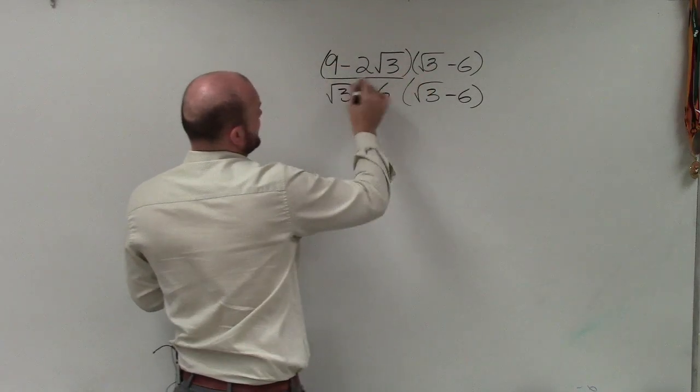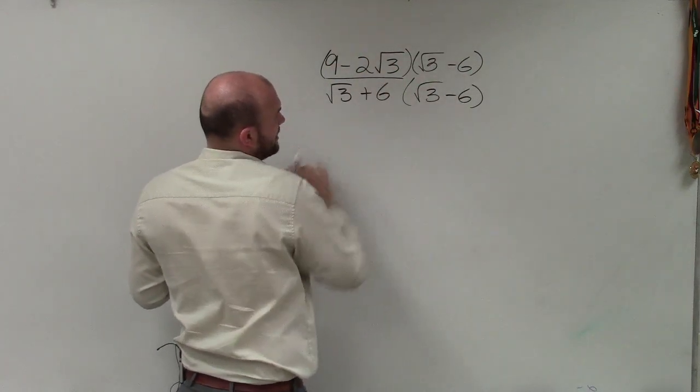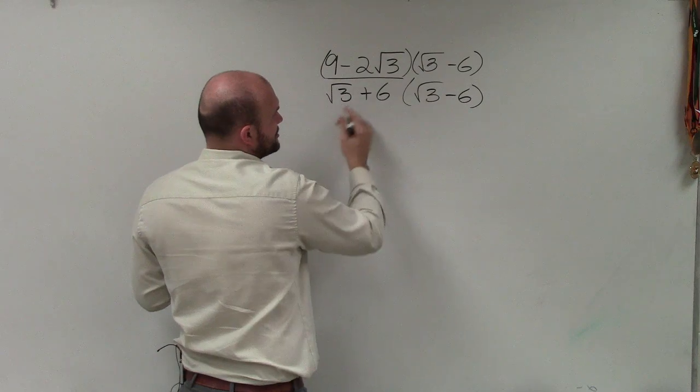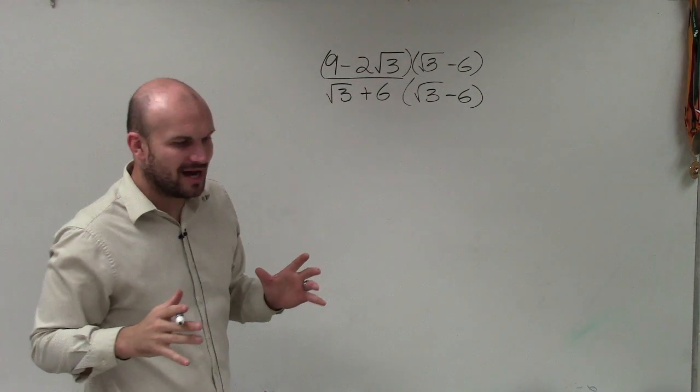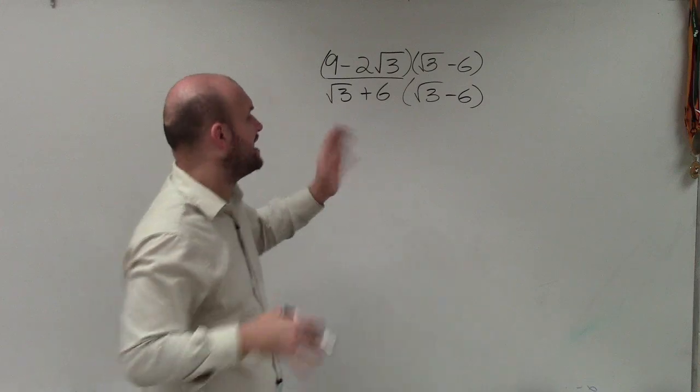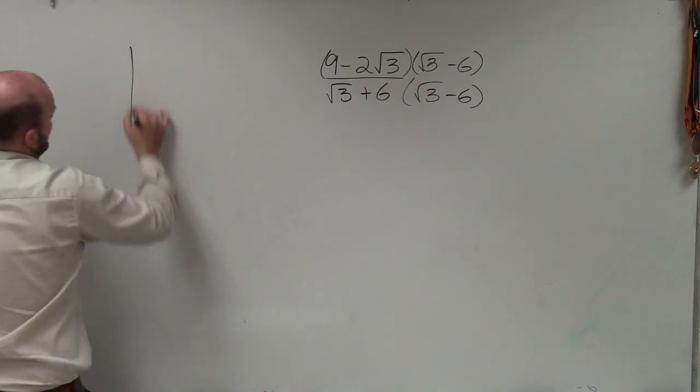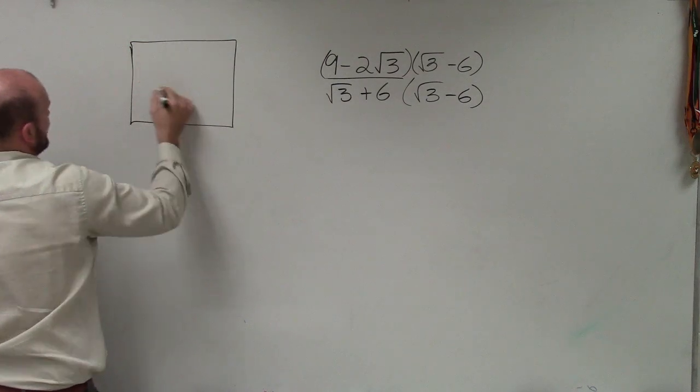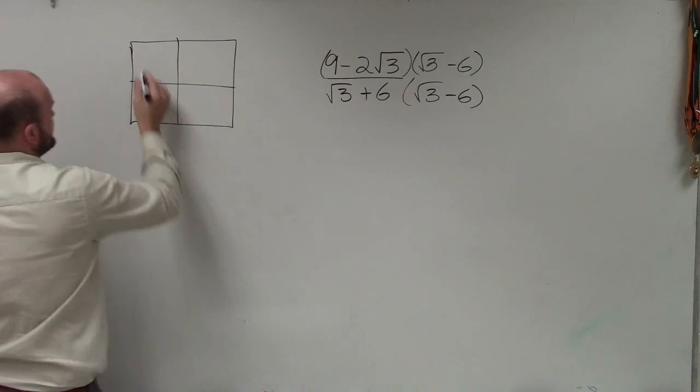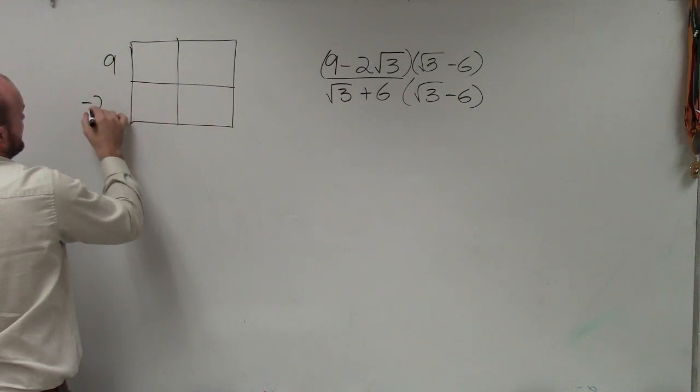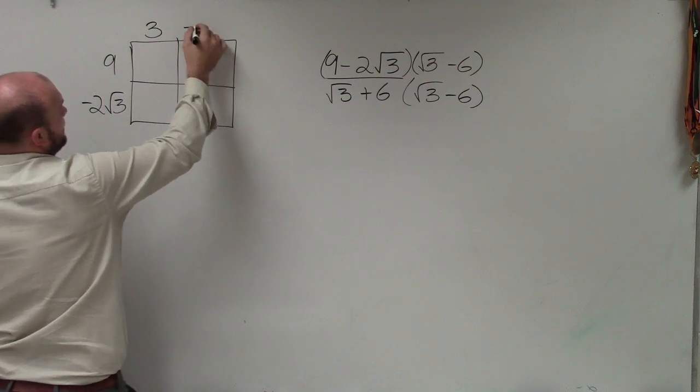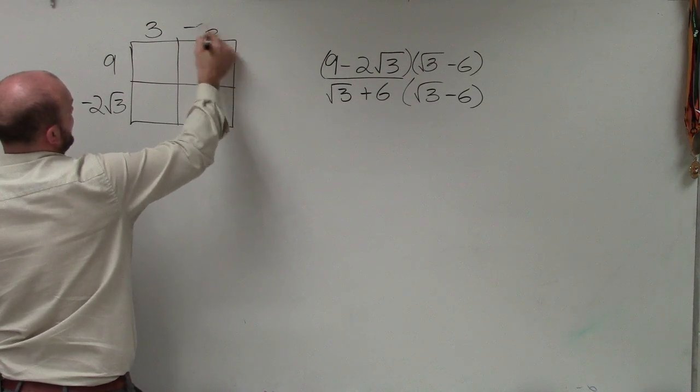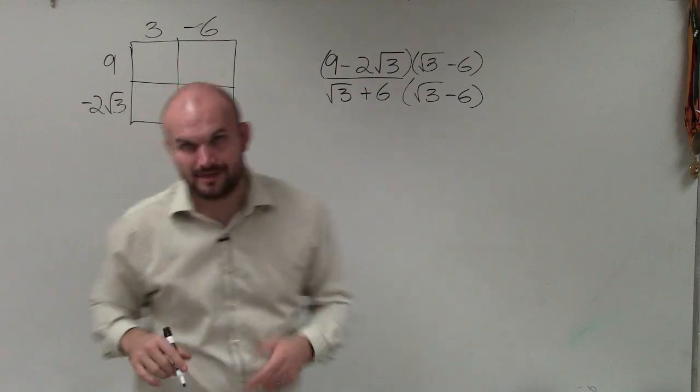The hard part here is going to be foiling our numerator because our denominator is just difference of two squares. I can show it either way, but let's go through it again. To multiply these, the easiest way that I like to do it is just use a box. I like using the box method because it allows me to organize my multiplication very easily.